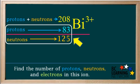So the ion has 83 protons and 125 neutrons. At this point, double check to make sure protons and neutrons add up to the mass number, which they do. 83 plus 125 is equal to 208.